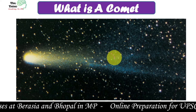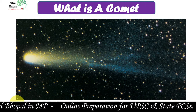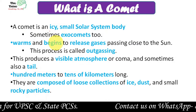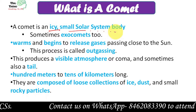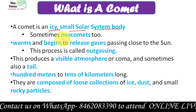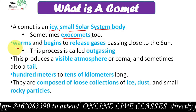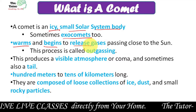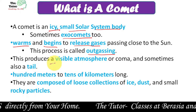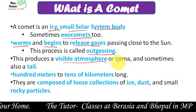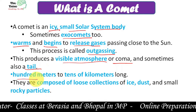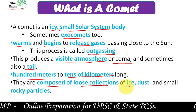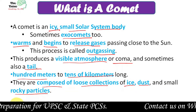A comet is a very beautiful thing made up of things that make it much more beautiful. A comet is made up of gases and dust — it is an icy small solar system body. Some of them are exocomets, meaning they do not belong to our solar system. Whenever a comet comes close to the sun, it starts to release gases — a process known as outgassing. This produces a visible atmosphere known as a coma or tail. The tail may be hundreds of meters to tens of kilometers long. Comets are composed of loose materials like ice, dust, and small rocky particles.